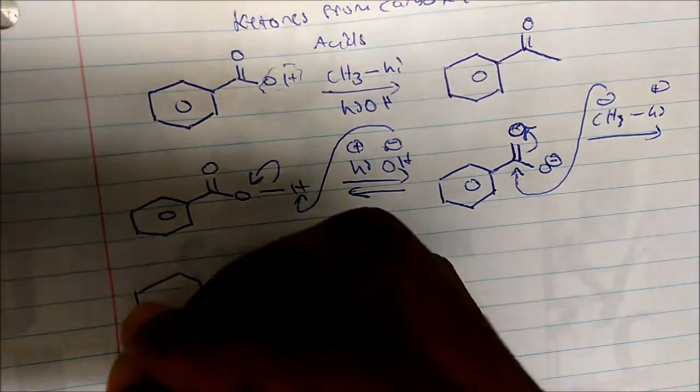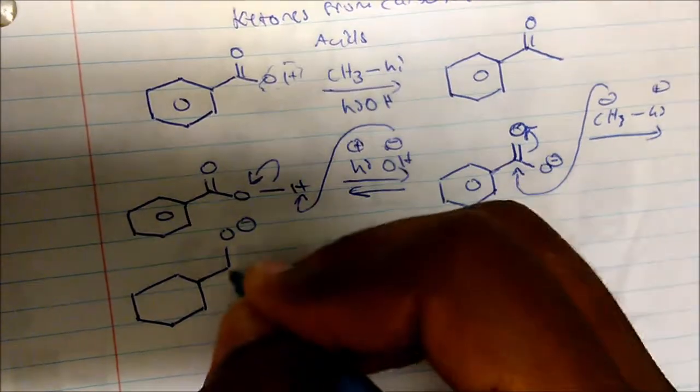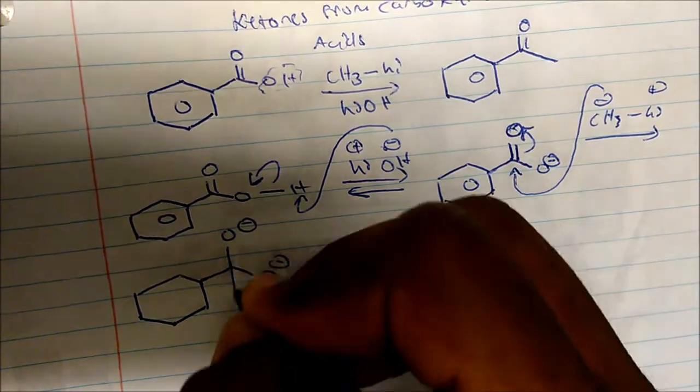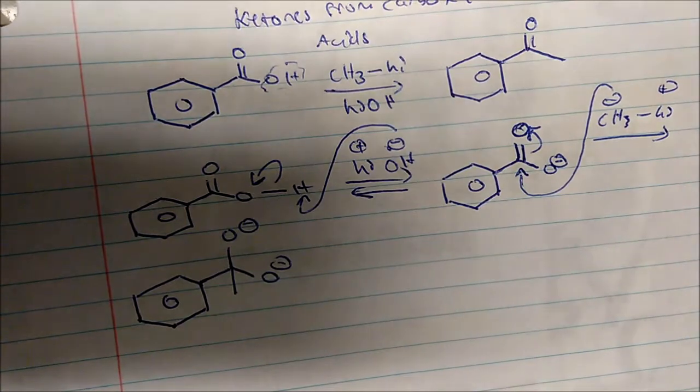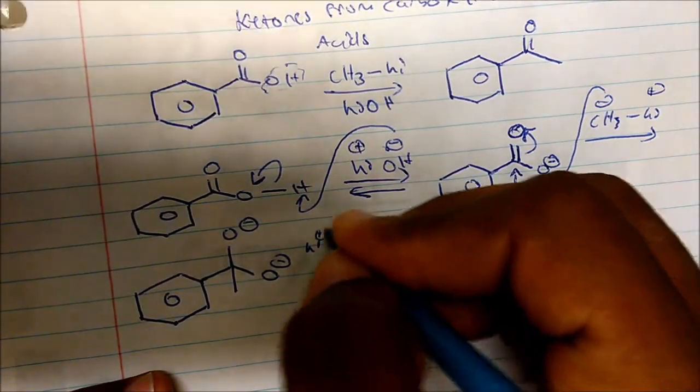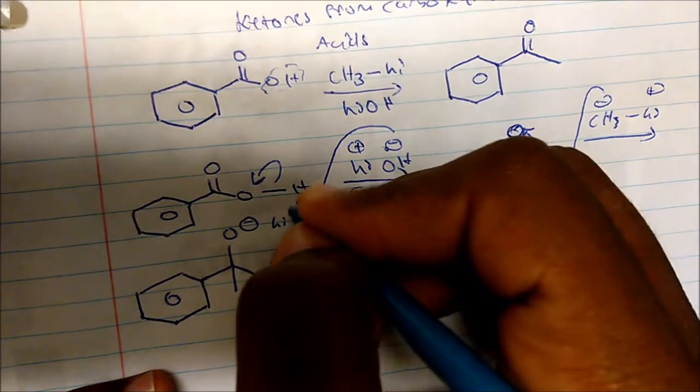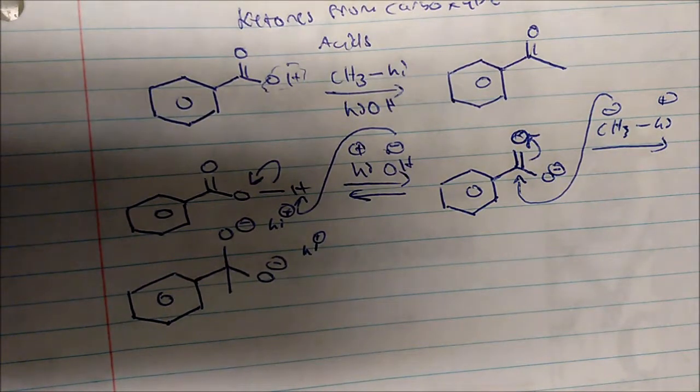So now we're at an intermediate that looks like this. We have an O-, we have another O-, and we have our CH3, and here's our ring. Now don't forget, we have the lithium plus charges that are balancing out these negative charges here, so now we're at an intermediate that looks like this.